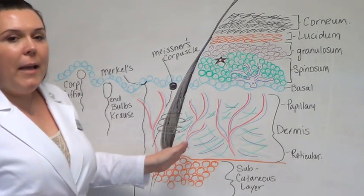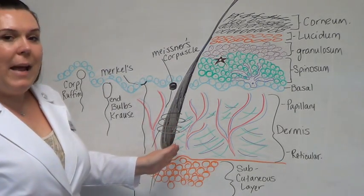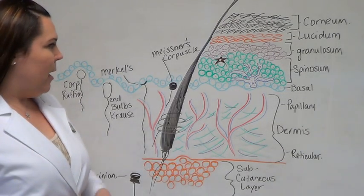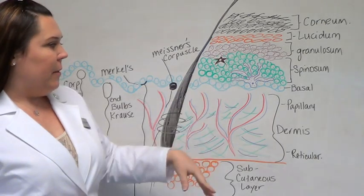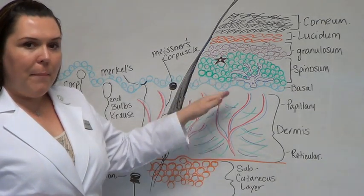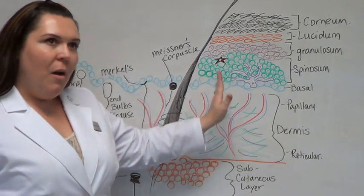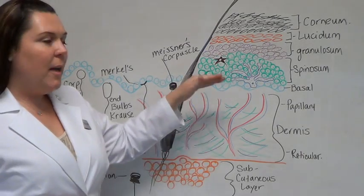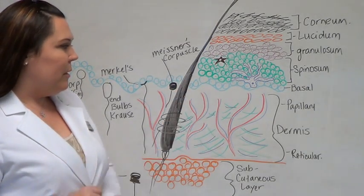Also found in the dermis is the bulb of the hair. The hair follicle extends way down to the reticular layer of the dermis. Moving up, where the dermis meets the epidermis, we call this the epidermal-dermal junction. It looks just like one of those foam mattresses or an egg carton. If you were to peel the epidermis off, that's what you'd see.